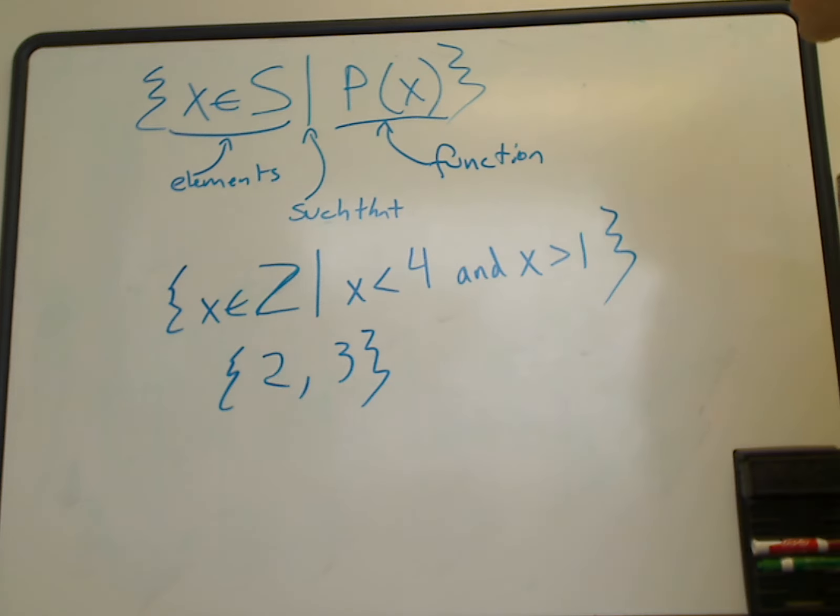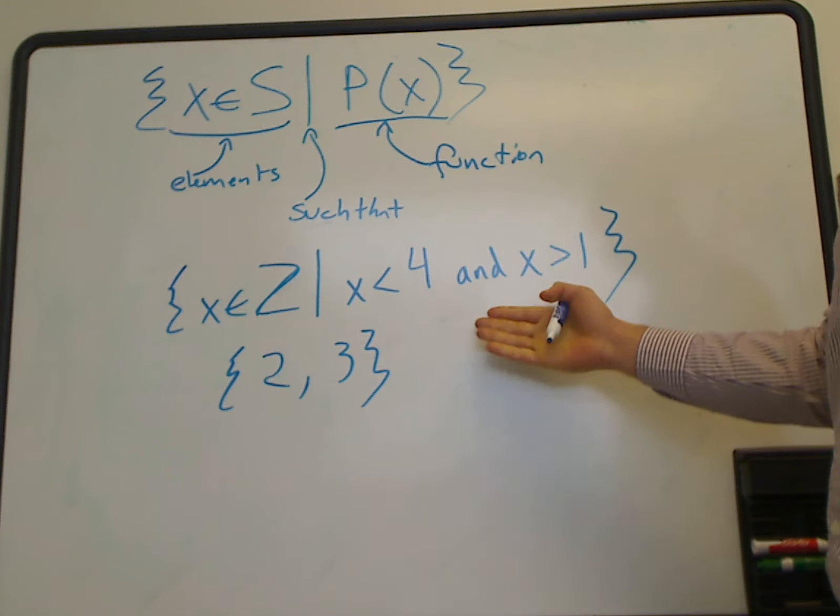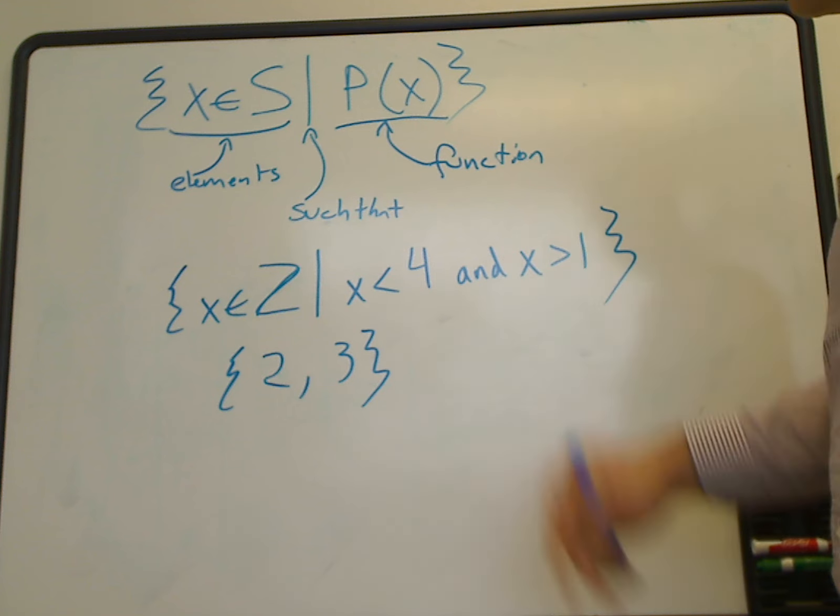This is a small example. Set builder notation is useful to describe sets formally for typically much larger sets. This is just a description of how to use these formalisms.